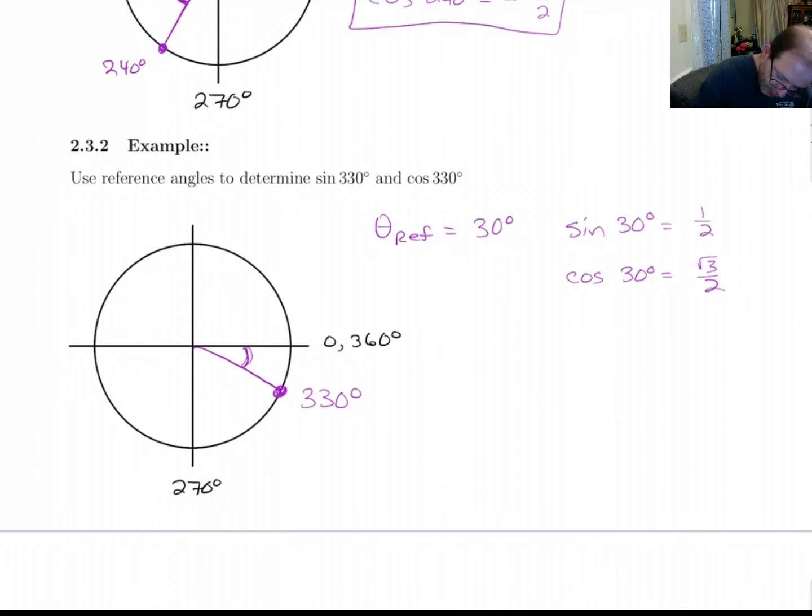So when we do sine and cosine of 330, if you look at ASTC, we're down here in this quadrant. This tells me that cosine is going to be positive, but sine is going to be negative.